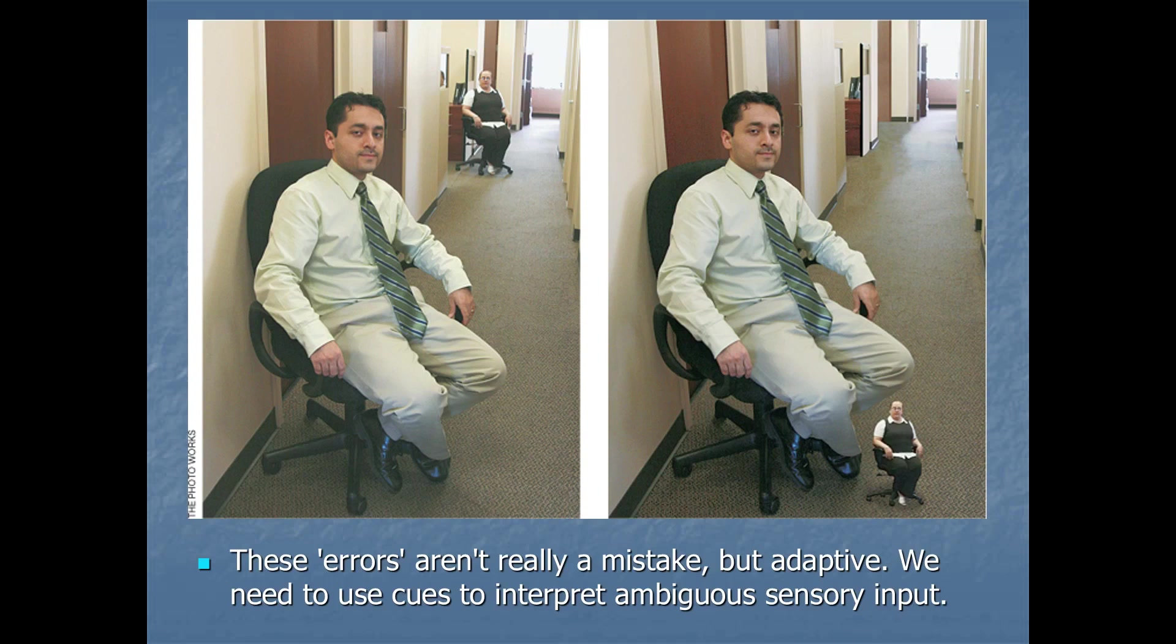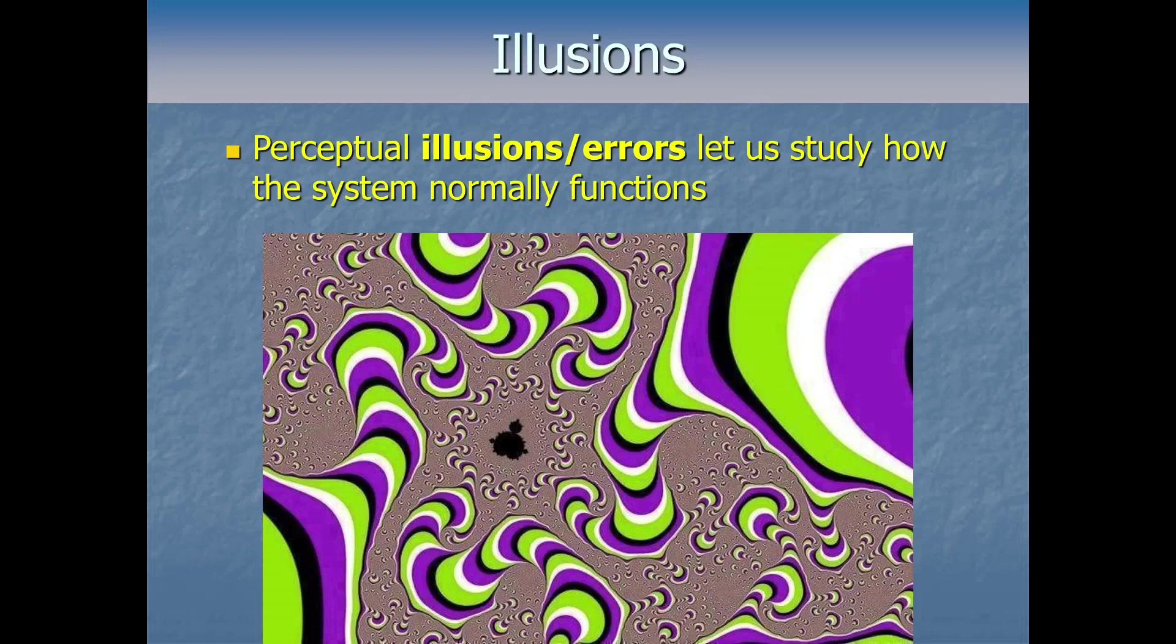So our brain has to have some rules or heuristics in order to make its best guess so that we can go and live our lives, so we can go and interact with things. So what we could really say is perceptual illusions or errors, they're important. They're actually a big part of sensation and perception, not just because they're fun and they make us laugh or we can impress our friends. It lets us study how the system normally functions. And we will see lots of examples throughout the course and we'll return to these ones that we've seen and see why they occur.